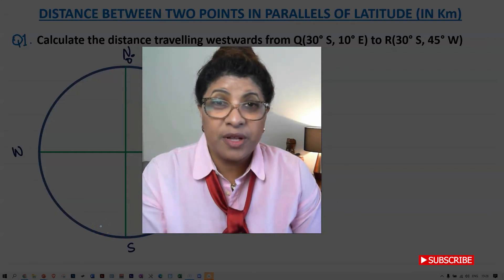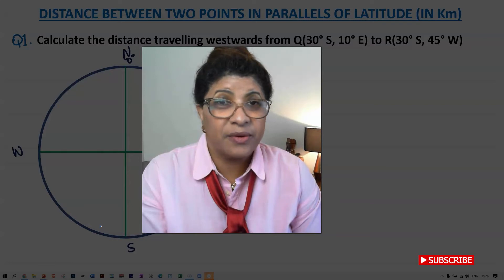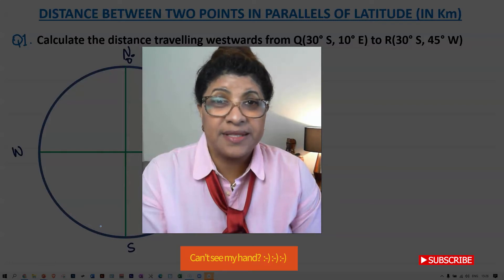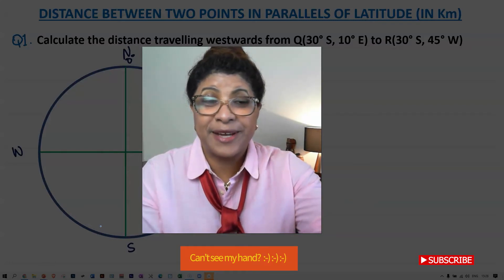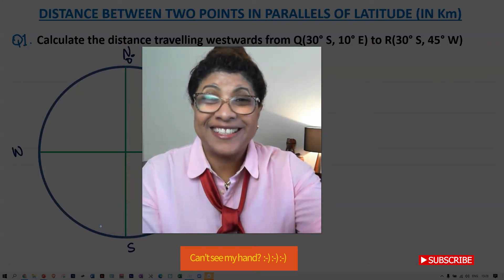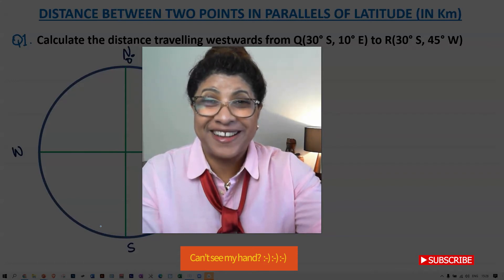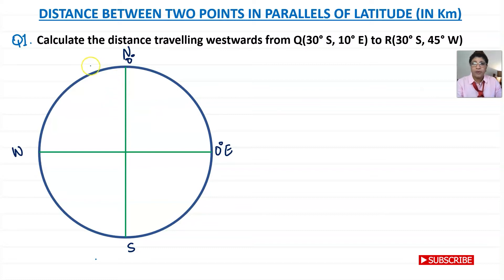If you don't want to miss the next session, press the subscribe button — it's on the bottom right of your screen. Okay, let's start the session. Question one: we are asked to calculate the distance traveling west first from point Q, which is 30 degrees south, 10 degrees east.